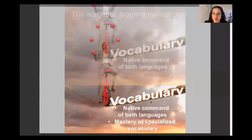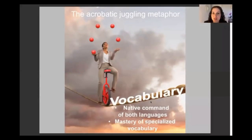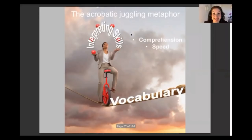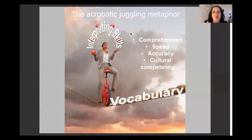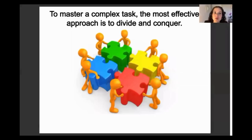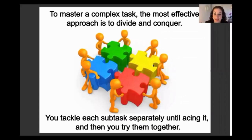You need mastery of specialized vocabulary — that's what step one addresses. Once the vocabulary is no longer a tightrope but solid ground, you begin adding interpreting skills: juggling comprehension, speed, accuracy, and cultural competency. Cultural competency means understanding what something means in the original language and expressing it naturally in the target language so it doesn't sound like a contrived interpretation.